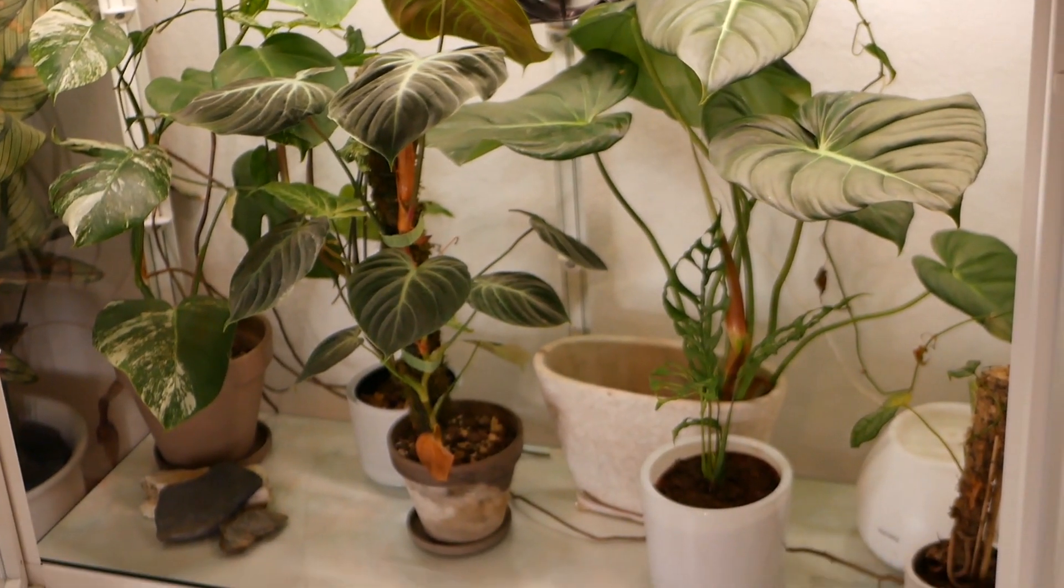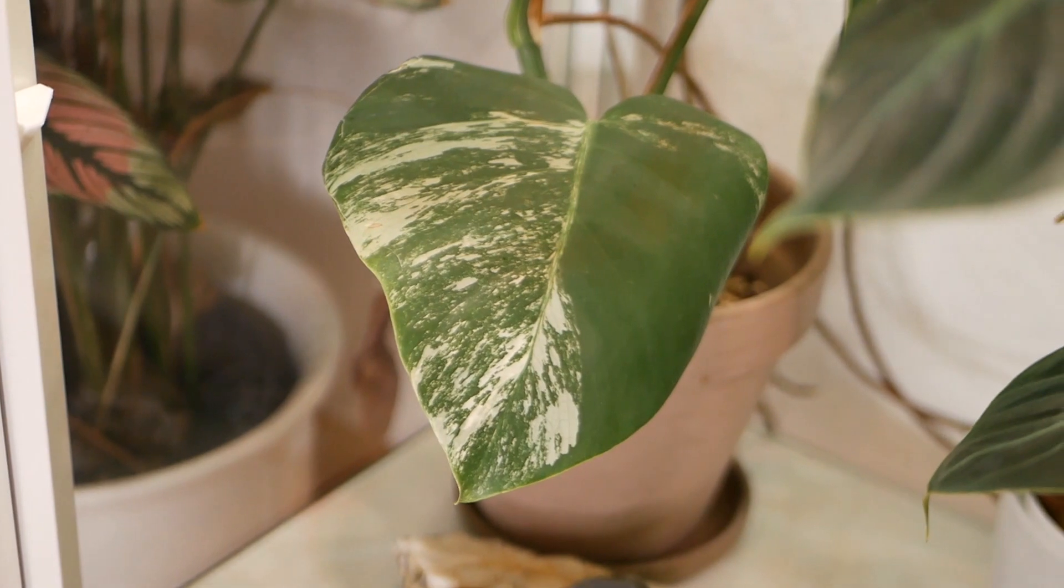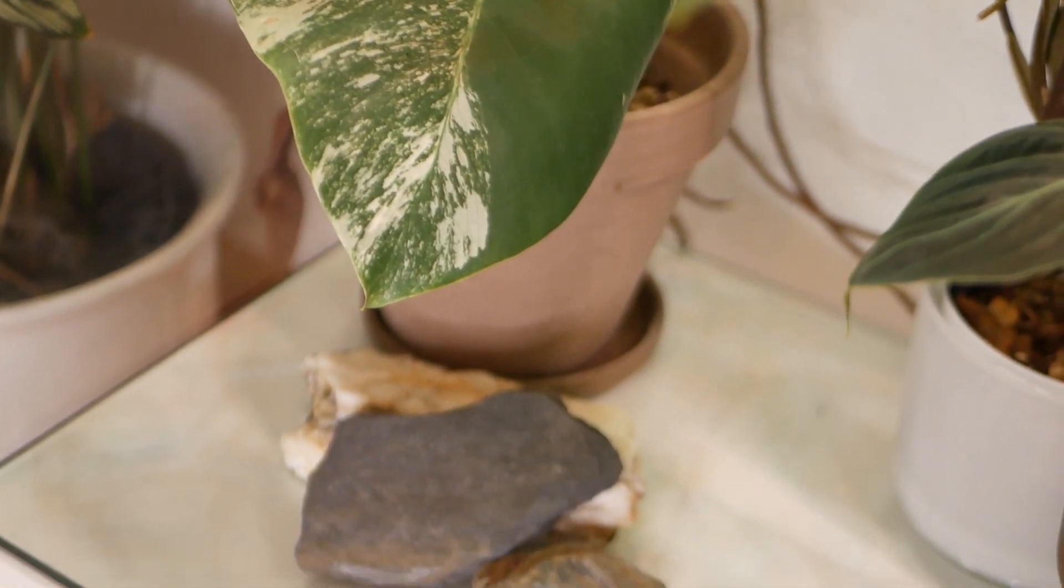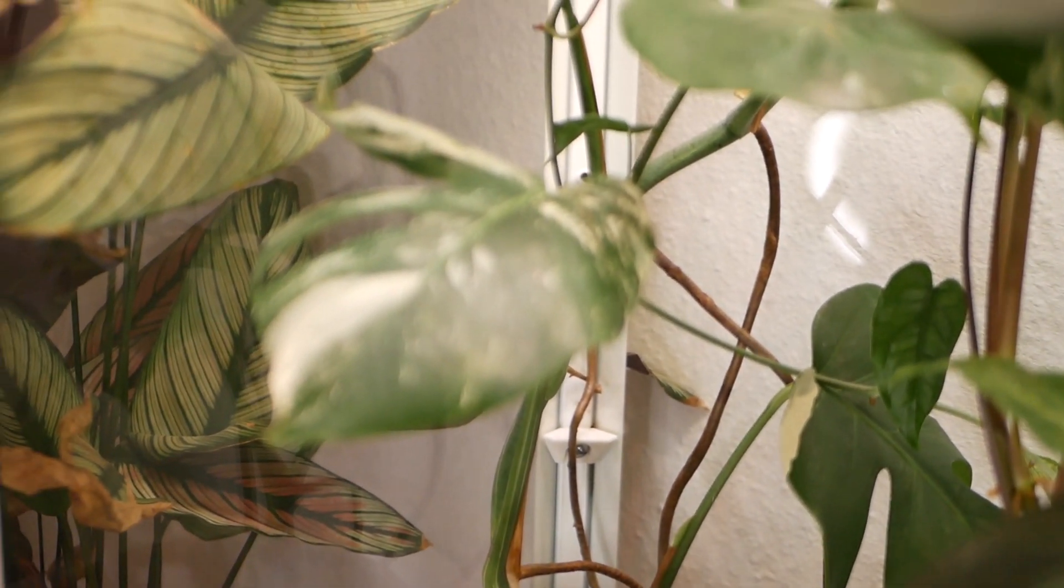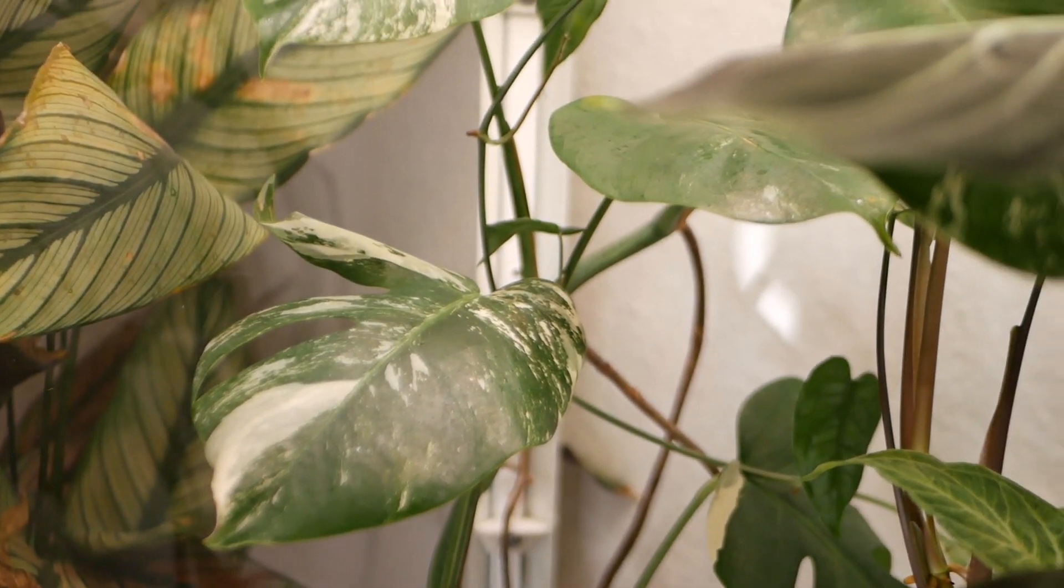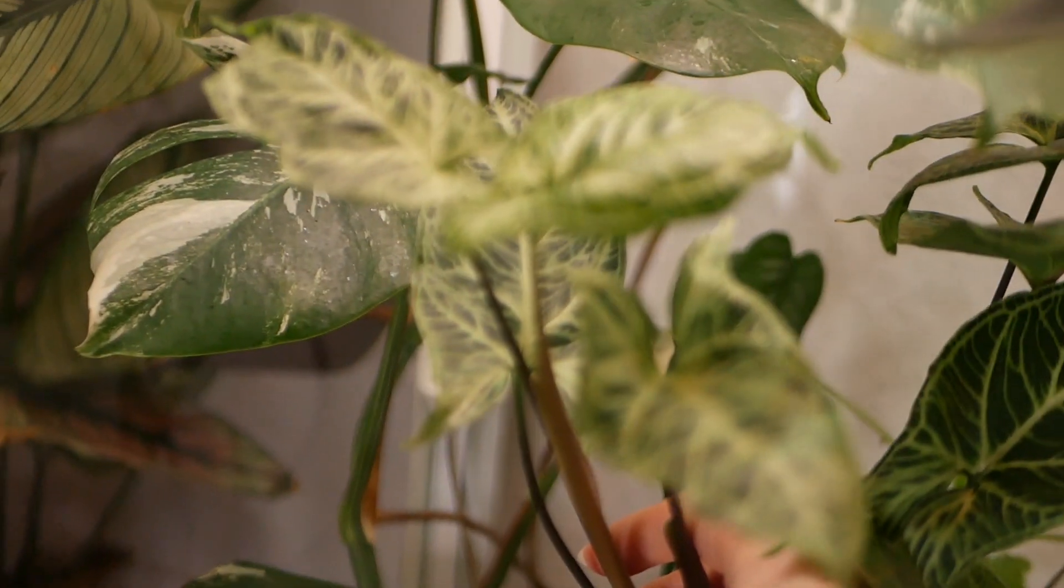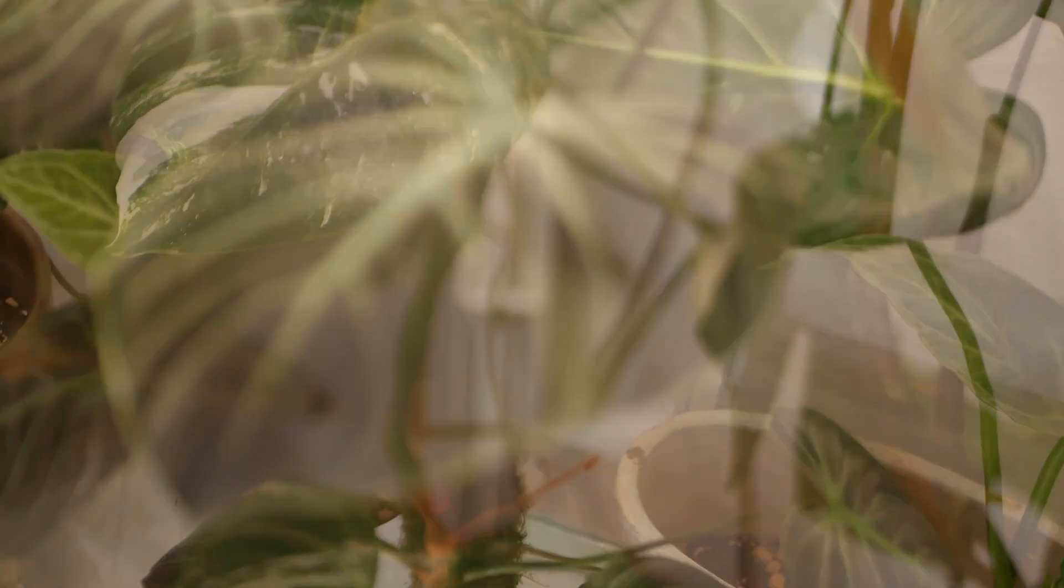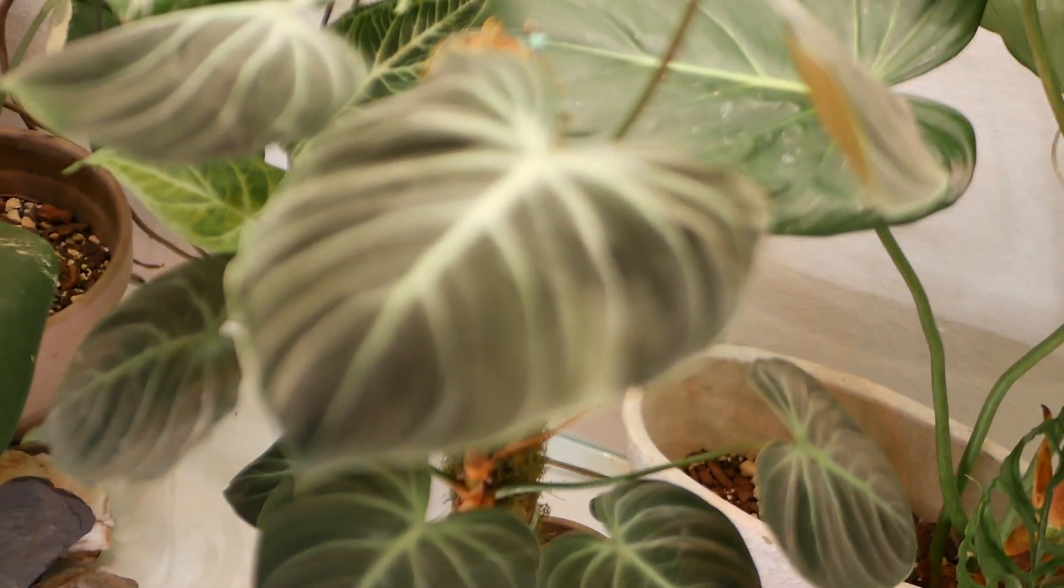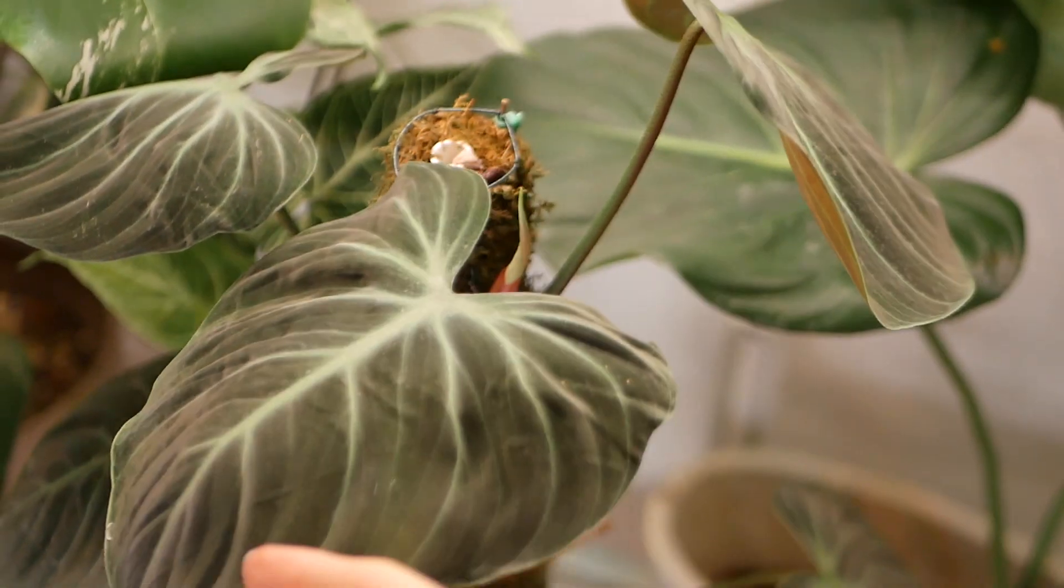Now we're moving on to my greenhouse cabinet in the kitchen and the first plant is my elbow monstera. Then we have a syngonium batik. There you can see my philodendron el choco red which is putting out a new leaf.